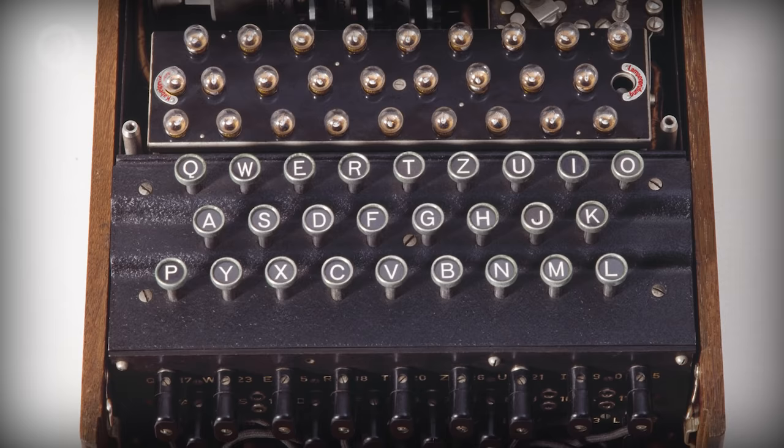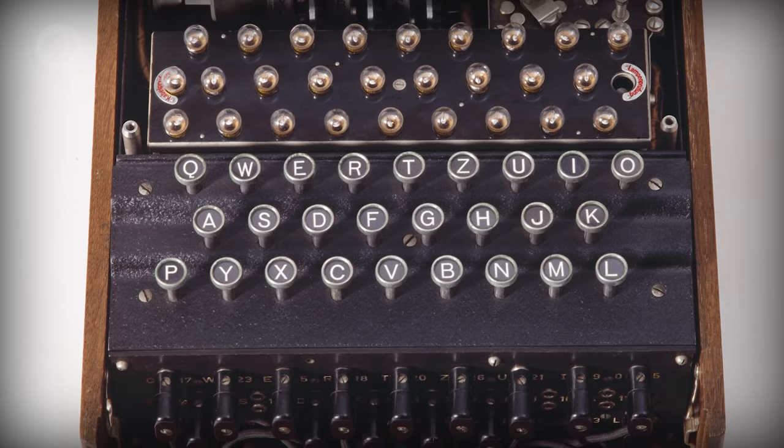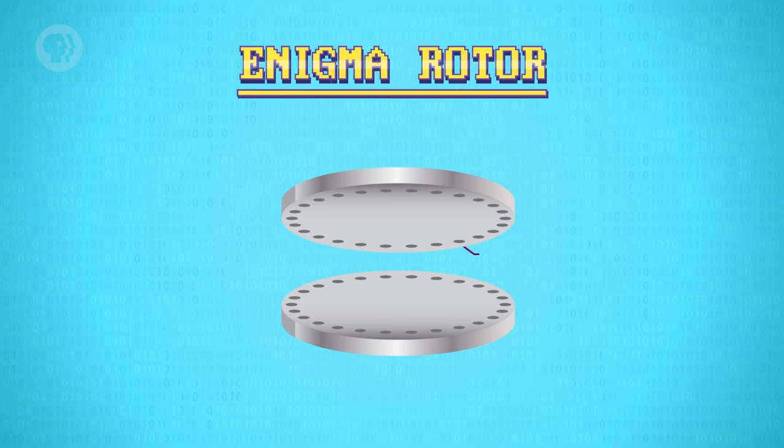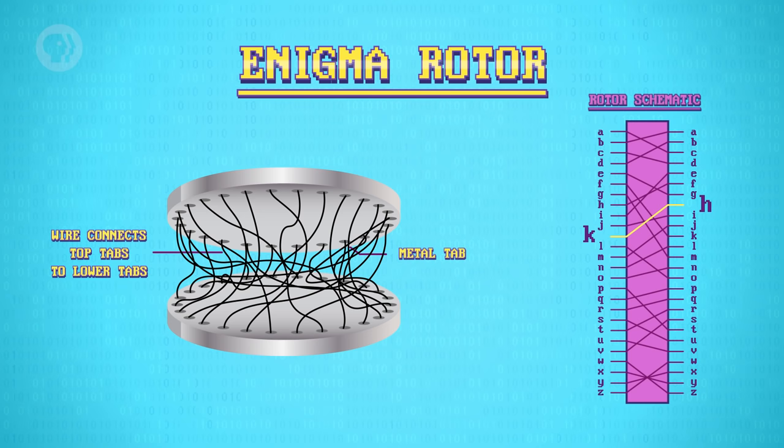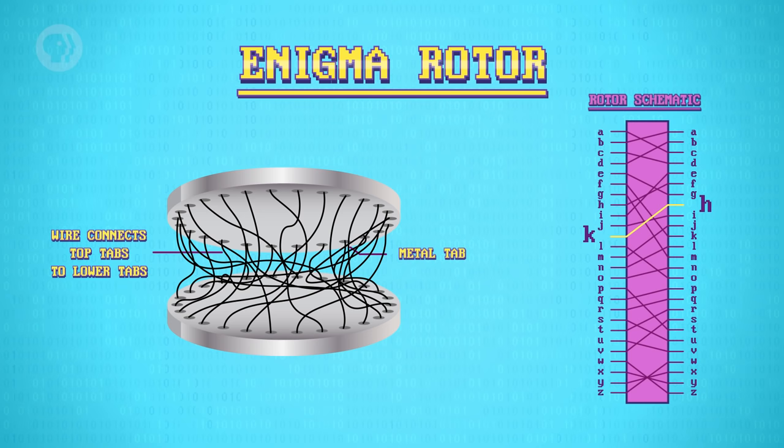By the 1900s, cryptography was mechanized in the form of encryption machines. The most famous was the German Enigma, used by the Nazis to encrypt their wartime communications. The Enigma was a typewriter-like machine with a keyboard and lamp board, both showing the full alphabet. Above that, there was a series of configurable rotors that were key to its encryption capability. One side of each rotor had electrical contacts for all 26 letters, connected to the other side using crisscrossing wires that swapped one letter for another — if H went in, K might come out; if K went in, F might come out.